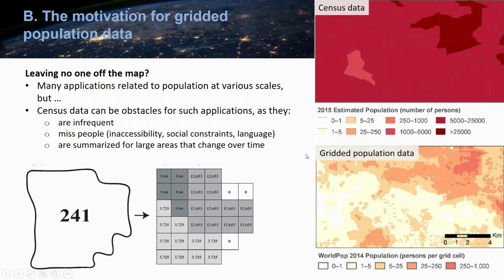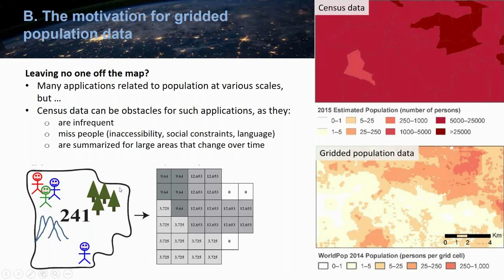Leaving no one off the map — many applications in environmental sciences, sustainability, and development are related to population at various scales. The big obstacle is census data themselves. Census data can be infrequent, and might miss people due to inaccessibility from vegetation, land use, or topographic conditions, as well as social constraints and language. Census data are also often summarized for very large areas that can change over time.